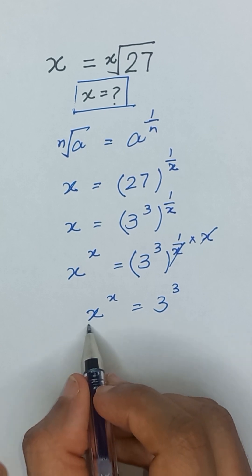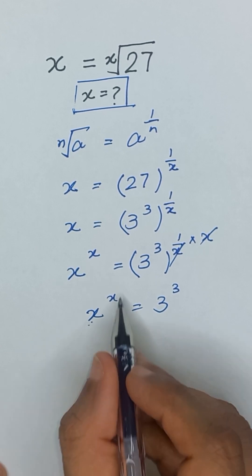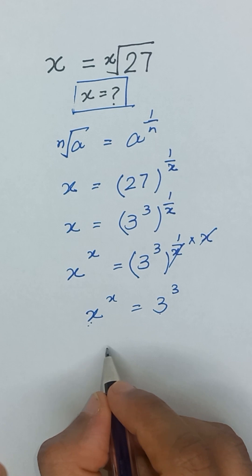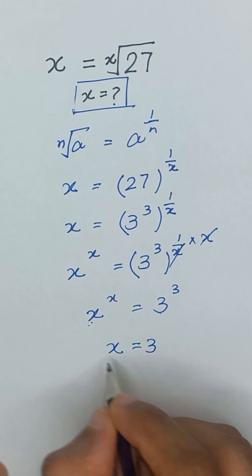So if we equate both sides, x to the power x, it means x has same exponent x, 3 has same exponent 3. So it means the value of x is equal to 3.